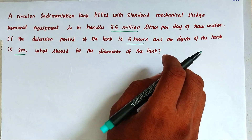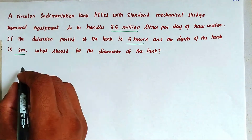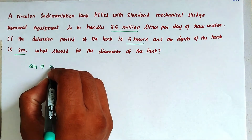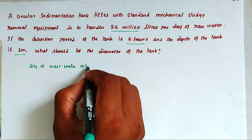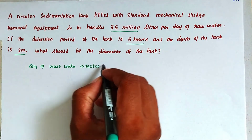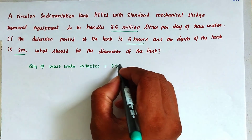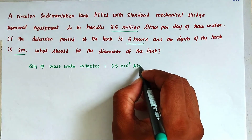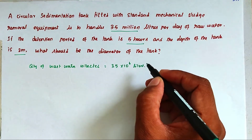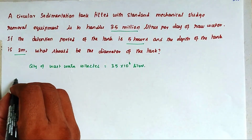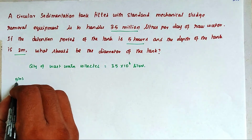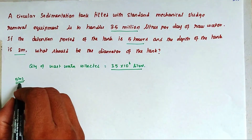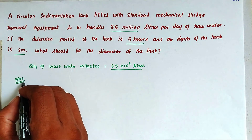So we have to find out the diameter of the tank. The quantity of waste water collected is 3.5 million liters, so 3.5 into 10 power 6 liters. Now the detention period is 5 hours, so the 3.5 million liters is only available in the tank for 5 hours.